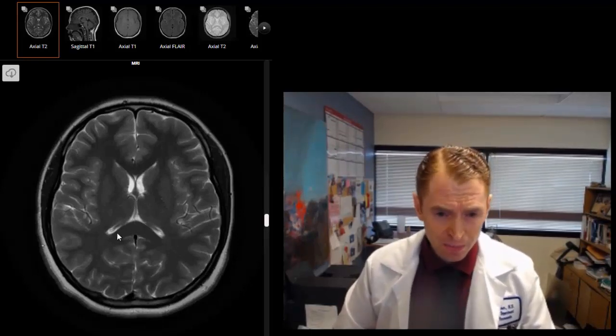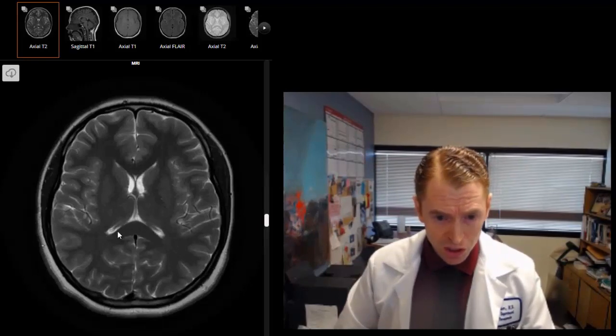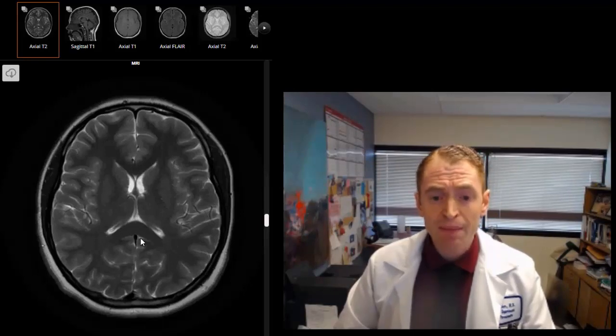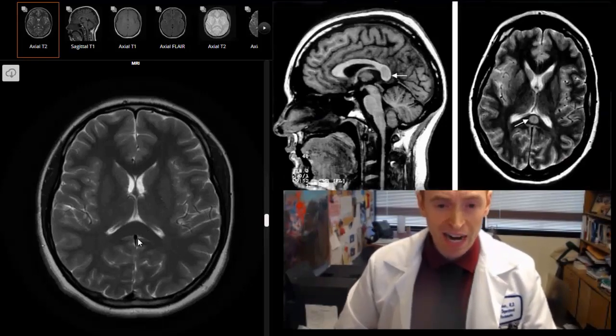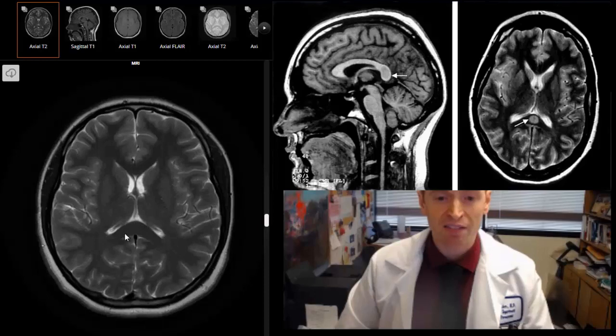Historically, surgeons used to perform a procedure where they would sever the corpus callosum to prevent seizures from spreading. The problem is that it can actually cause certain types of clinical symptoms, particularly if the splenium of the corpus callosum is injured. In modern times, they would actually only injure the anterior or front two-thirds of the corpus callosum. I'm actually familiar with a patient who had multiple sclerosis and had a lesion in this area. Their first symptom of multiple sclerosis was the inability to read. This was actually a graduate student who suddenly could not read his textbooks.